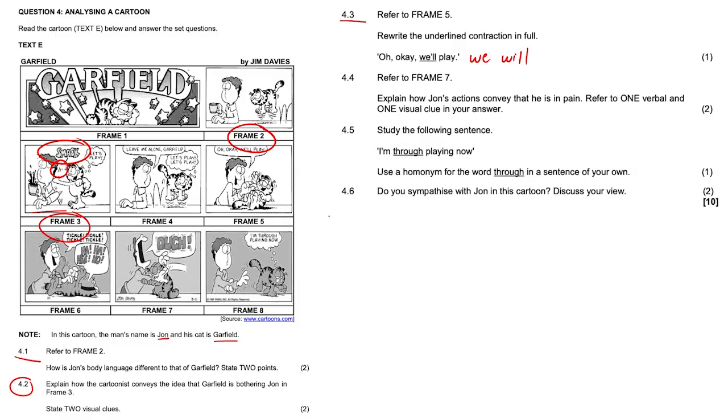4.4. Refer to frame 7. So here's frame 7. Explain how John's actions convey that he is in pain. Refer to one verbal and one visual clue in your answer. That's gonna be coming from frame 7. So verbal: He shouts ouch and that ouch is written in bold as an exclamation mark. Visual: his mouth is really wide open. The movement lines behind his head and back indicate that he tilts his head in sudden pain. John spreads out his fingers in pain. One verbal and one visual clue must be mentioned here. Guys it must be one verbal and one visual. That's what the question is asking you. Don't give me two verbal or two visual.